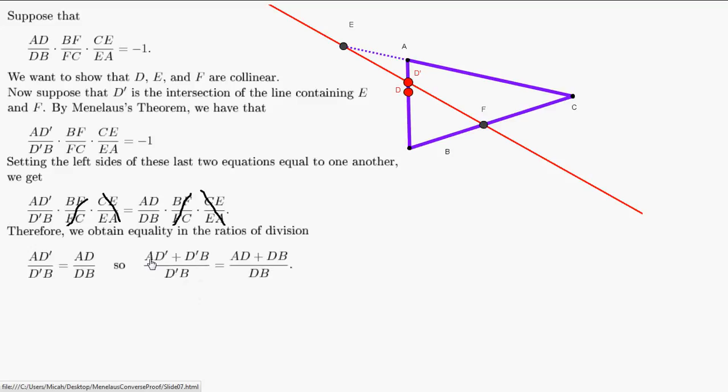Since we're adding the denominator in both cases, we're adding the same thing to both sides. Now look at AD' plus D'B. This says go from A to D' and then from D' to B. These are directed segments, so they work like vectors.